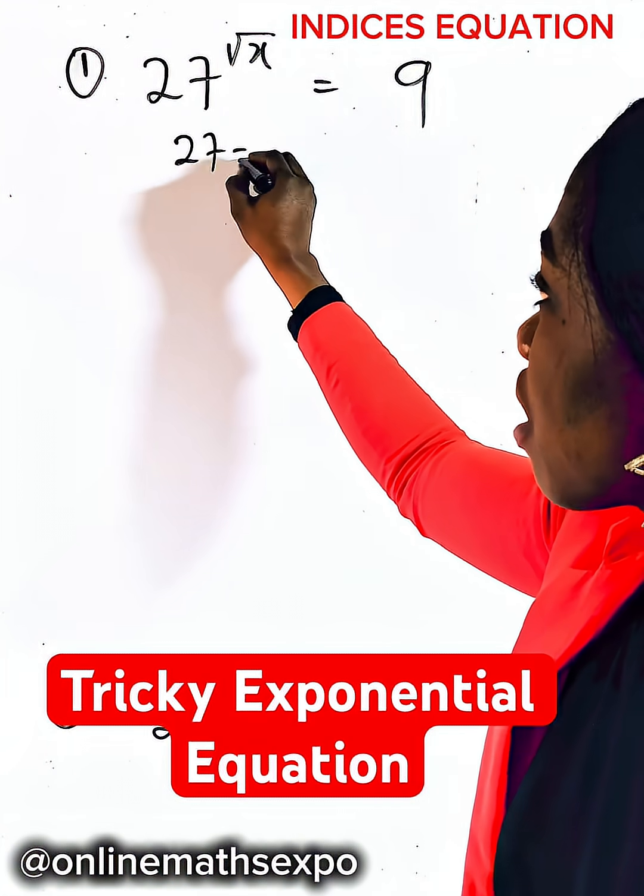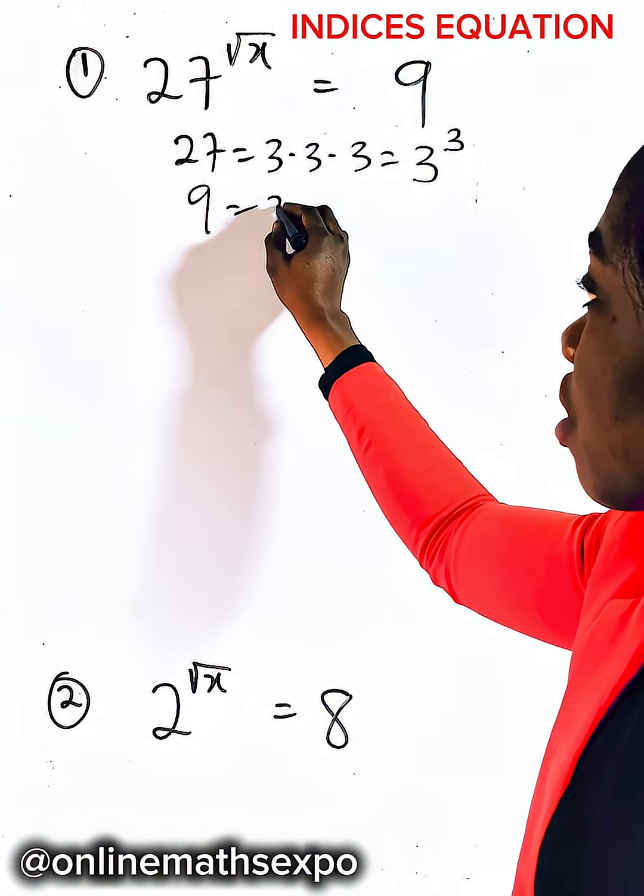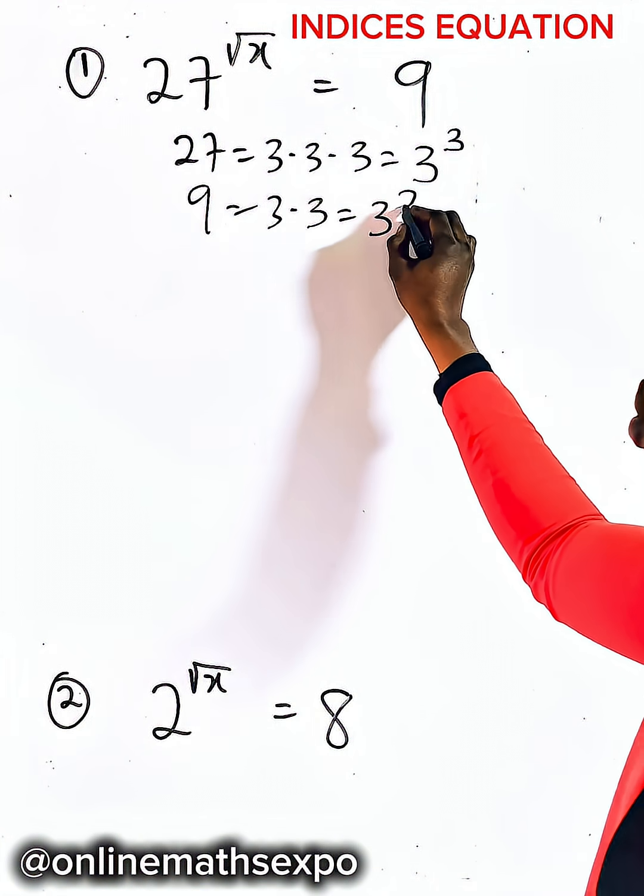27 is the same as 3 times 3 times 3, which is 3 cubed. 9 is 3 times 3, which is 3 squared.